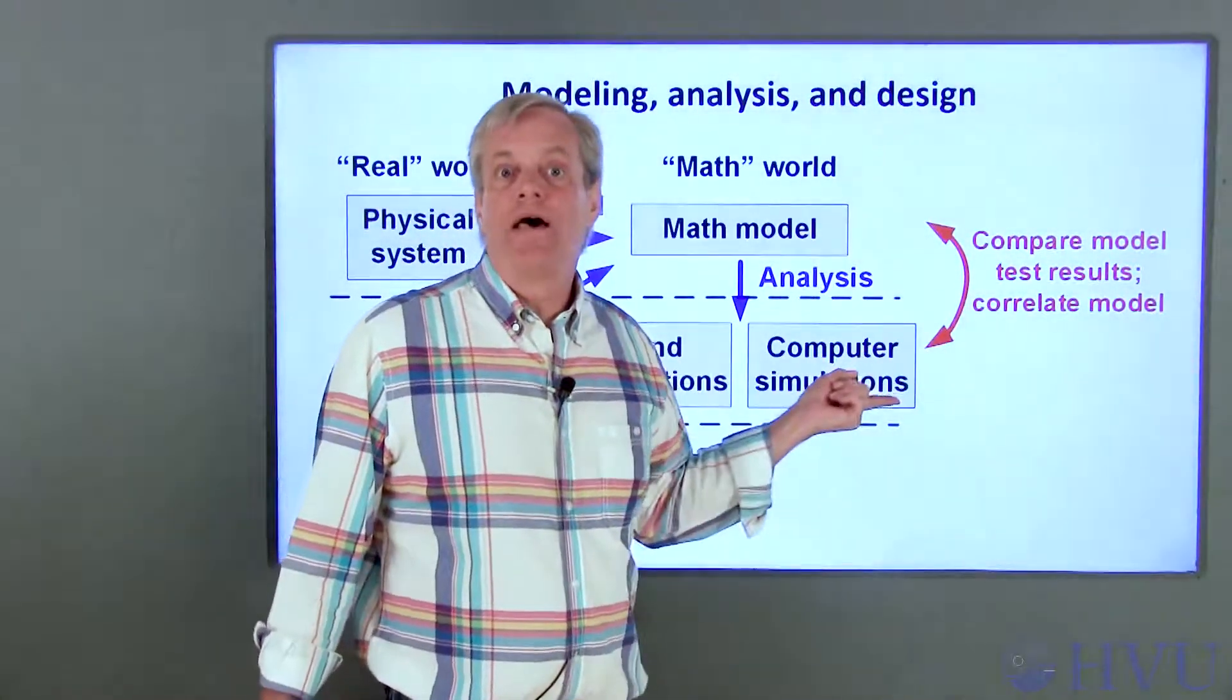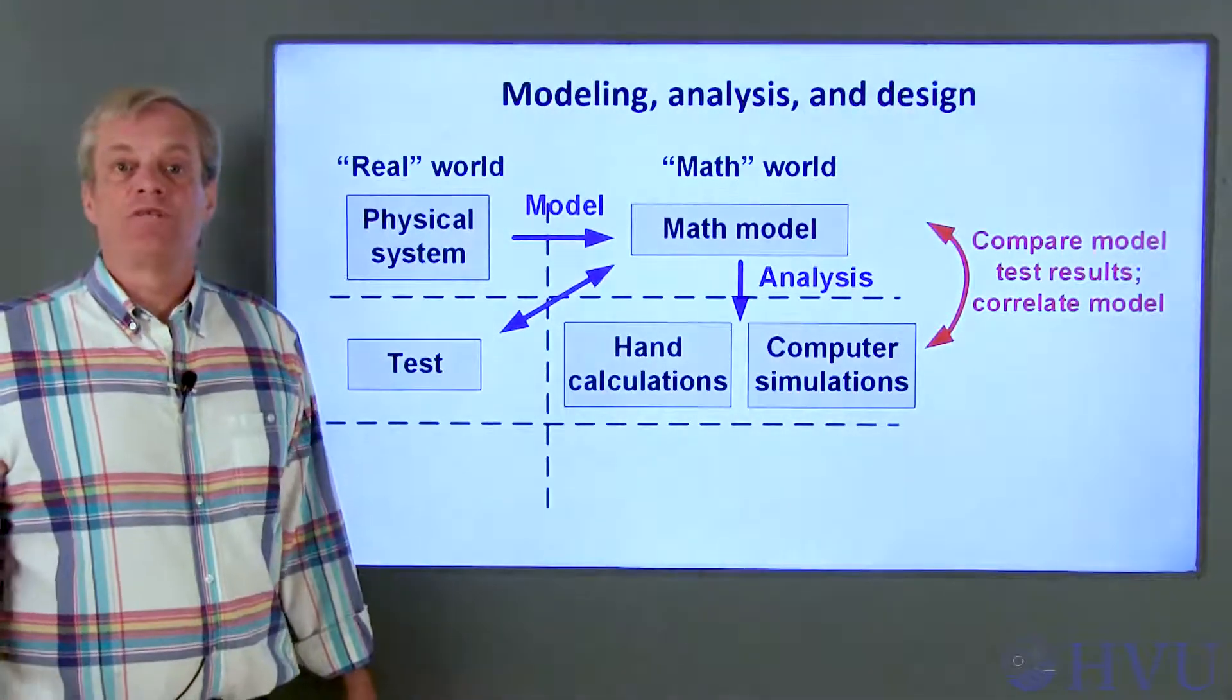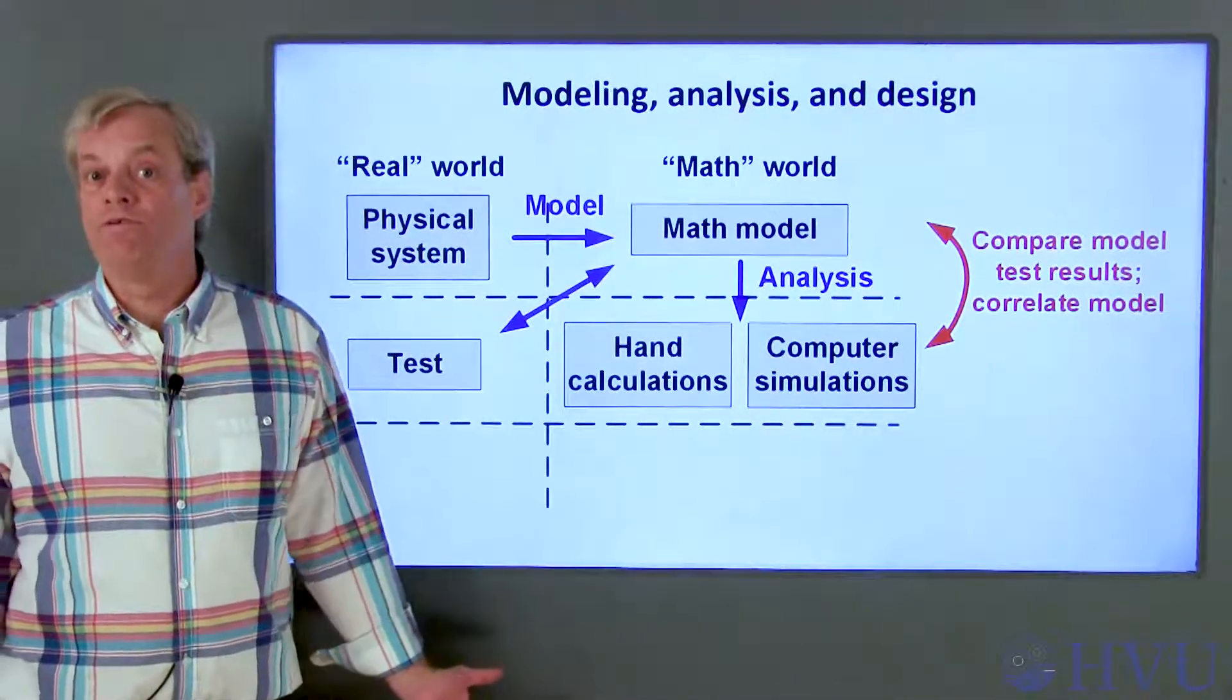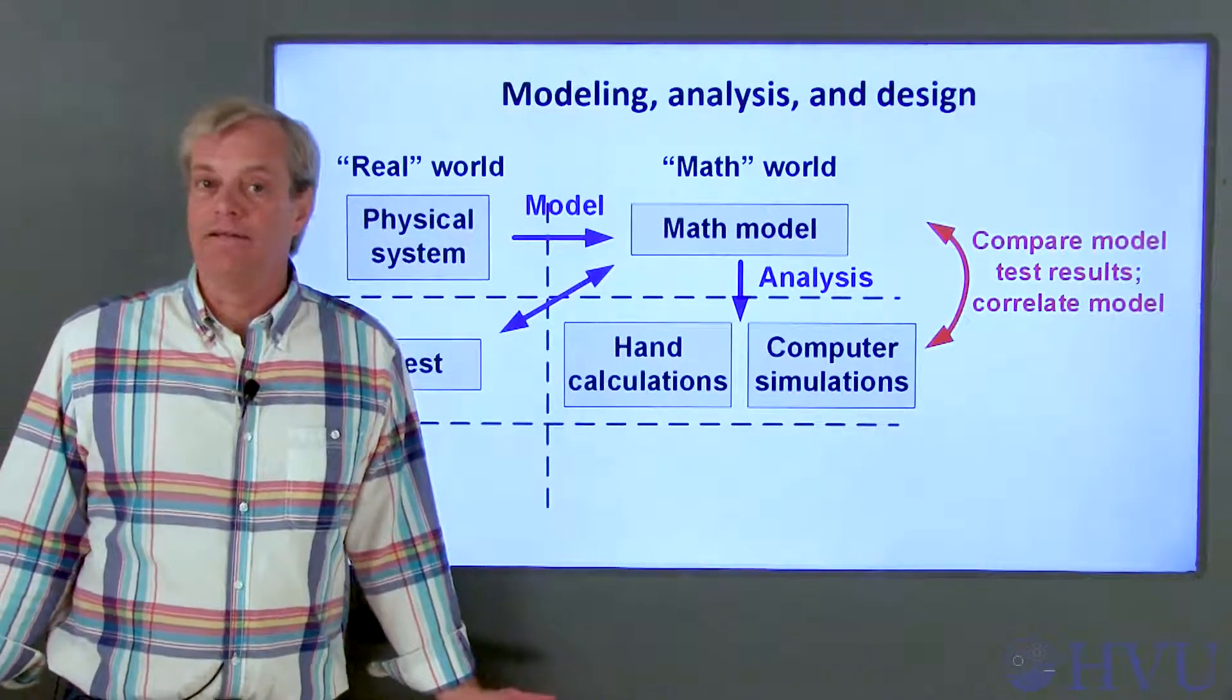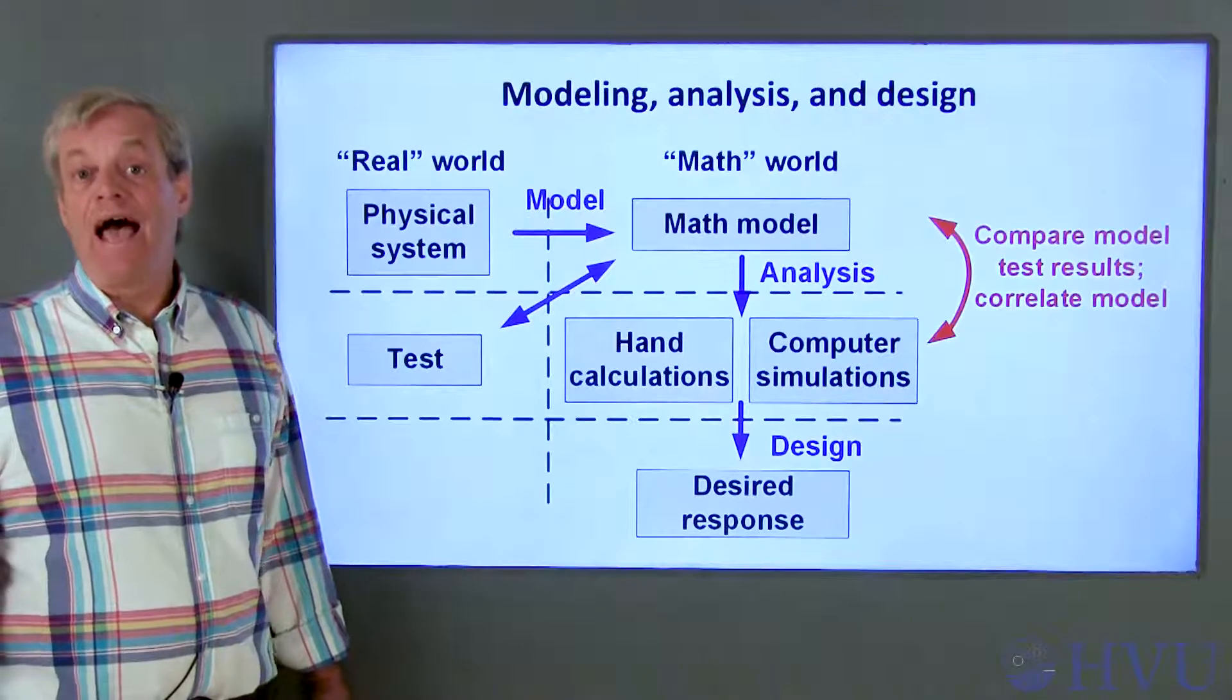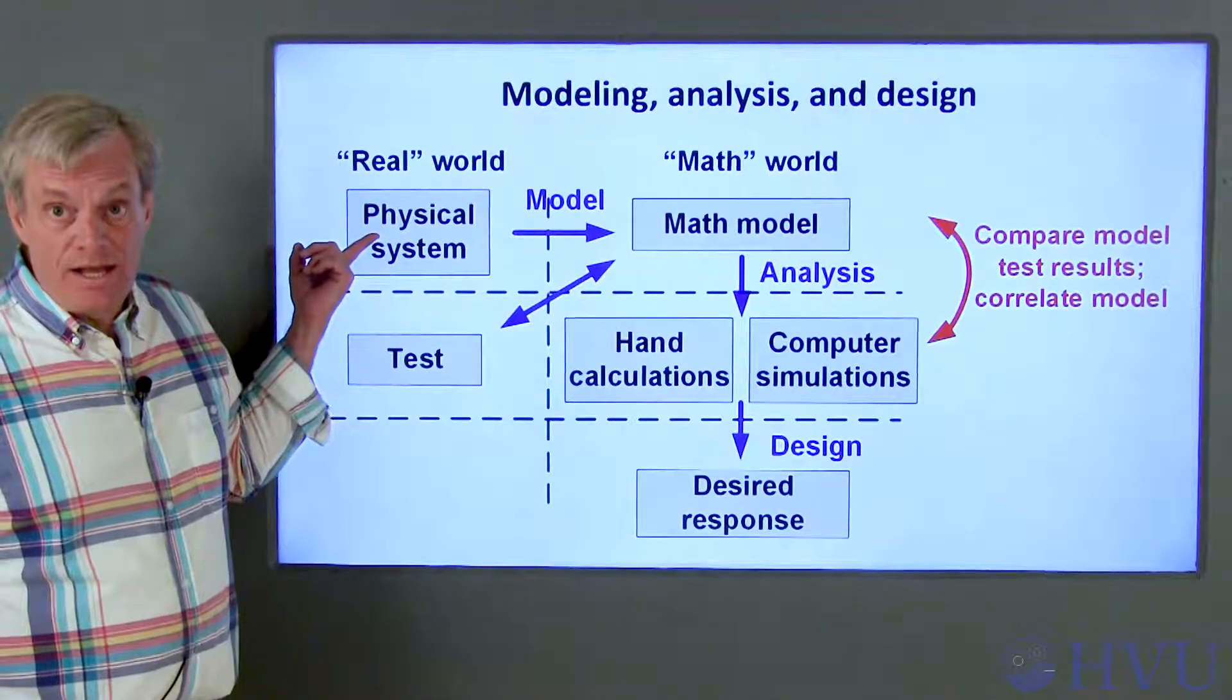So we'll probably test this system under conditions that we can analyze and modify our model as necessary to make the model agree with the test data. This process is called model correlation or validation. This step is crucial because we're going to use this model to finalize the system design, and we don't want to use a model that doesn't reflect reality. Once we've got some confidence that the math we're using actually predicts reality, we can use the math model to modify this original design.